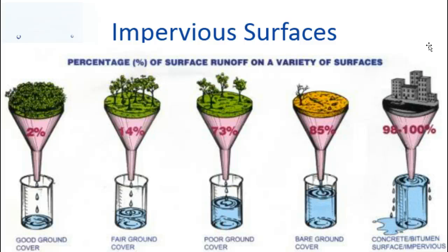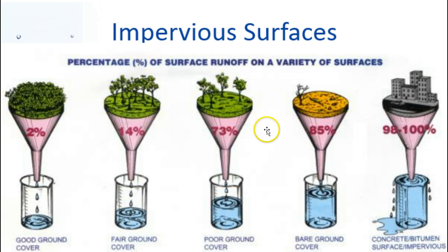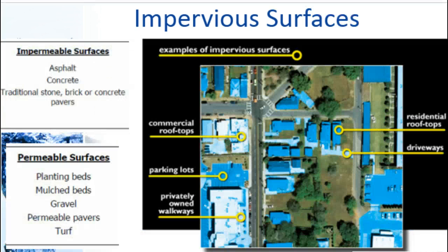Impervious surfaces are surfaces that water cannot drain through, so it keeps running along until it gets to an area where it can drain. The most common impervious surfaces are concrete, asphalt, or pavement in a parking lot. Slightly more pervious might be tightly packed soil — it still won't let a ton of water through, though clay-rich soil is fairly impervious. Gravel may allow a little more through but is still fairly impervious. The most pervious surfaces are those with a huge amount of plant cover, which help soak up and filter water.